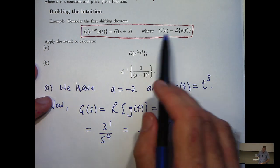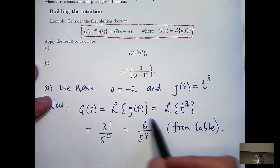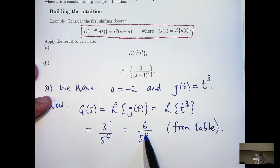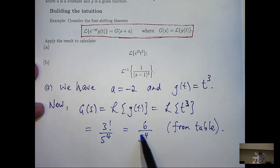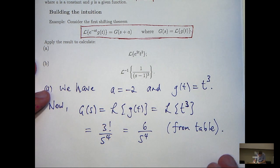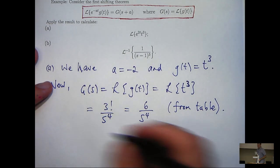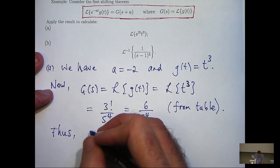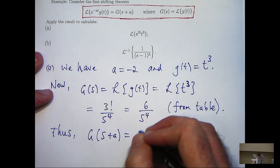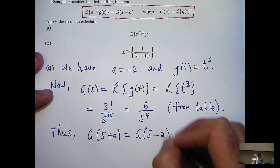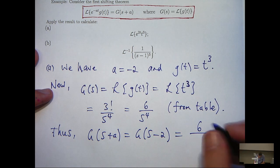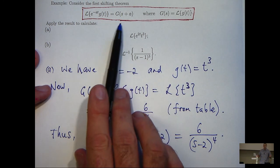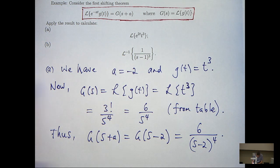We've calculated this part. Now let's shift this by replacing s with s plus a in brackets. For our particular example, we'll replace s with s minus 2 in brackets. Now we actually have the right-hand side, so we can apply the first shifting theorem.